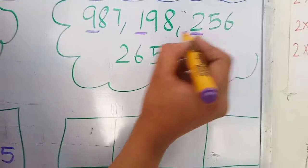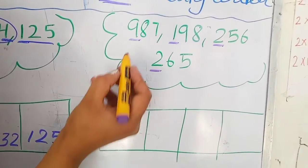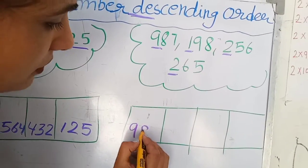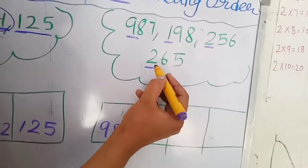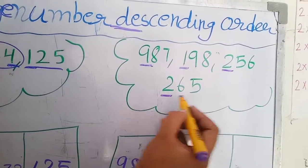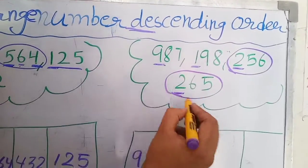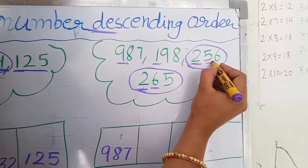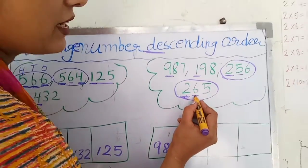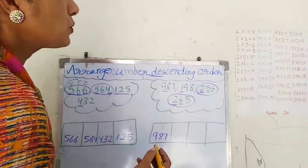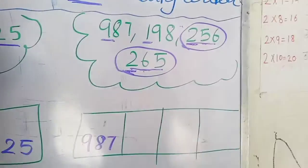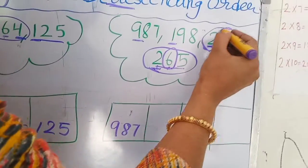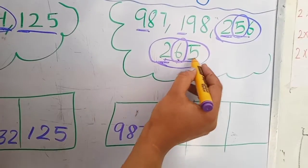The hundreds digits are 9, 1, 2, 2. The biggest number is clearly 987, so we write down 987 first. Now the next two numbers both have 2 in the hundreds, so we check the tens: 6, 5. We have 265 and 256. The tens digit 6 is bigger than 5, so 265 is bigger than 256.